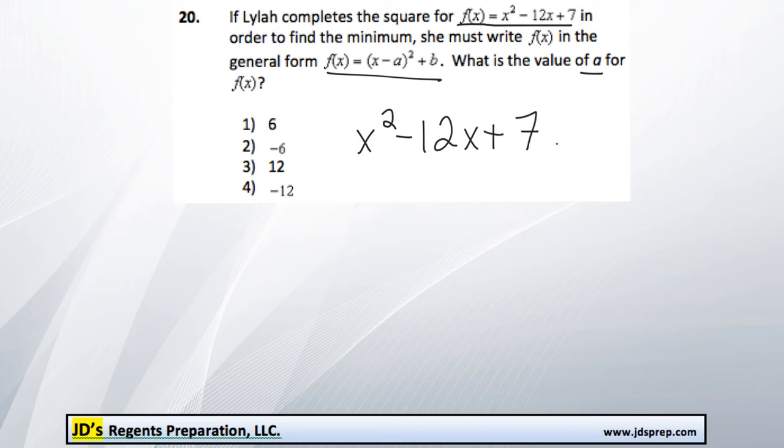In order to do that, we need to take the middle term, our b term here, which is negative 12, divide it by 2 and square it. Half of negative 12 is negative 6, and if we were to square that, we would get positive 36.